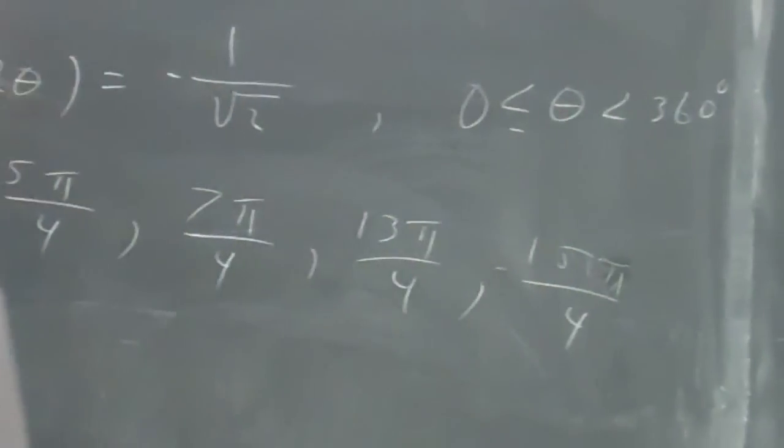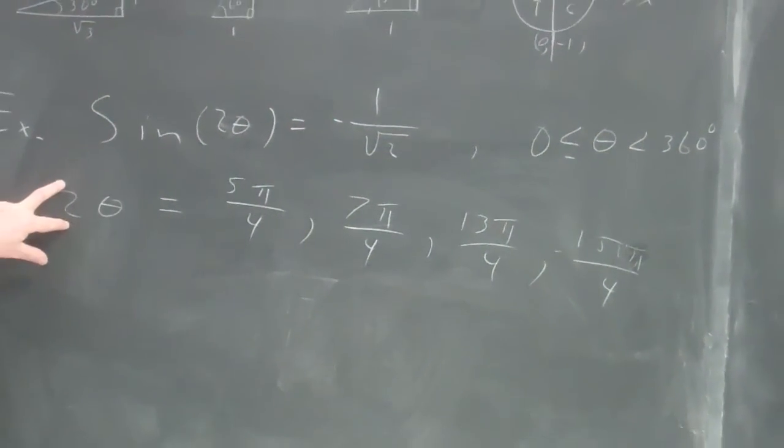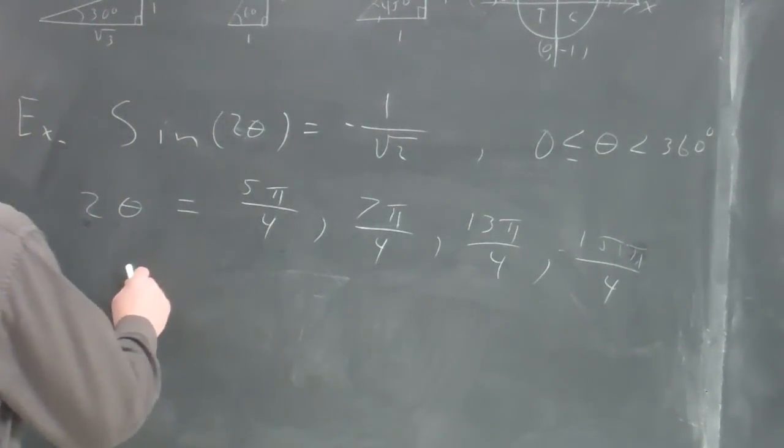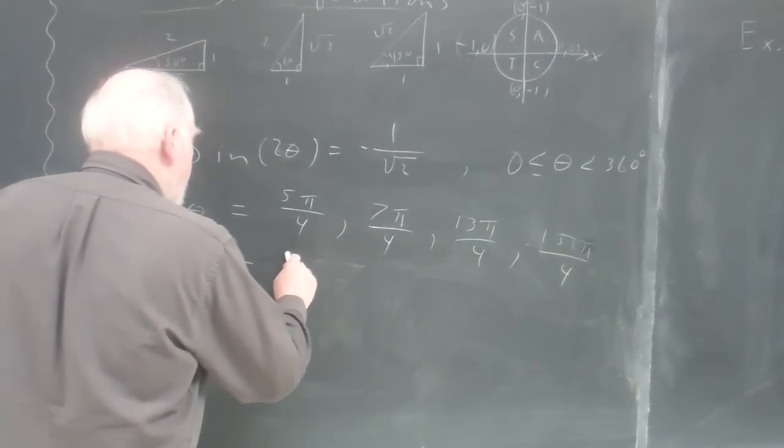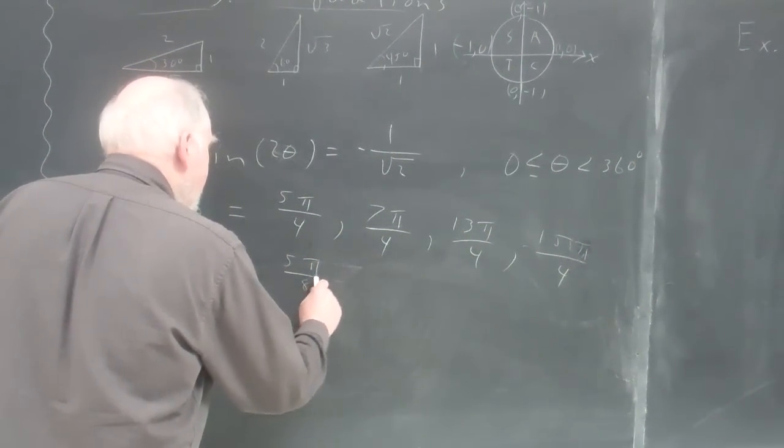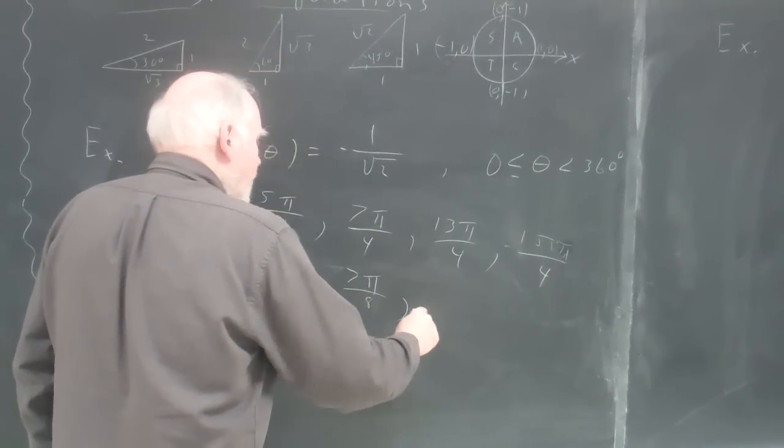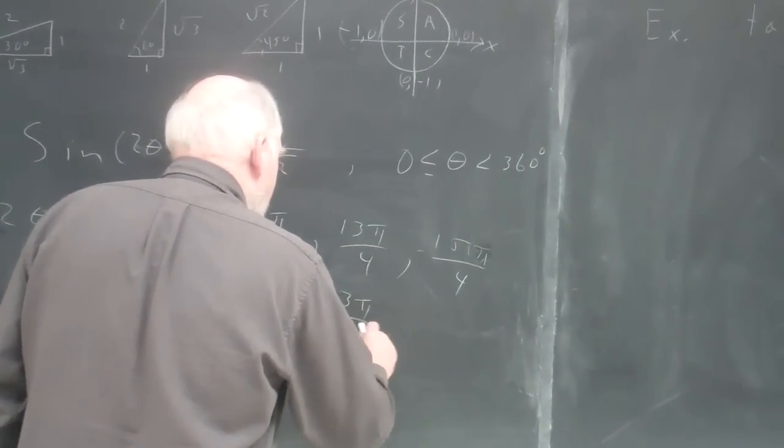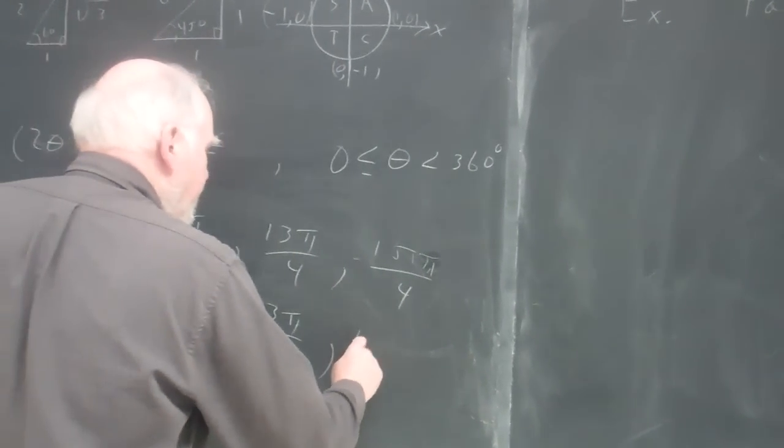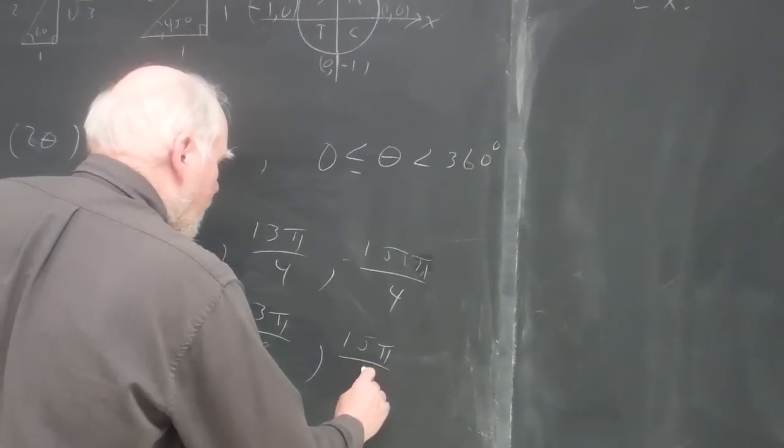Now I'm going to actually find out what theta is. I'm going to multiply this by 1 half and each one of these by 1 half. And when I do, I get theta equals 5 pi over 8, 7 pi over 8, 13 pi over 8, and 15 pi over 8.